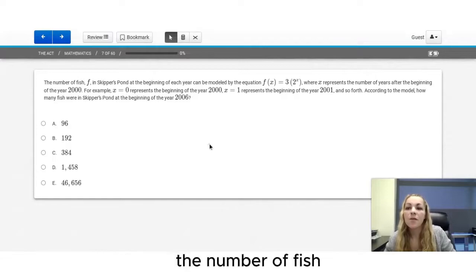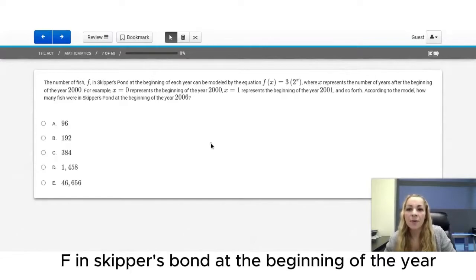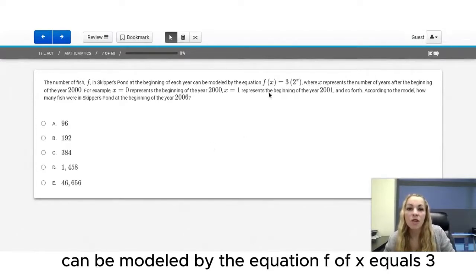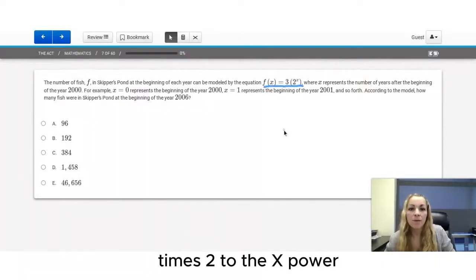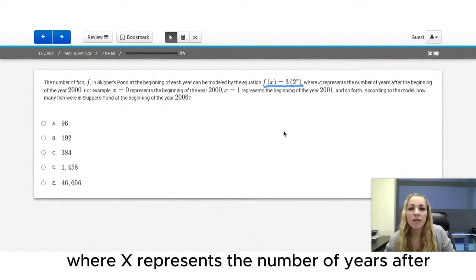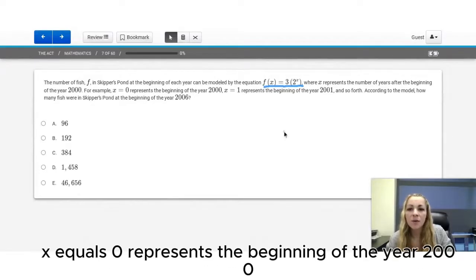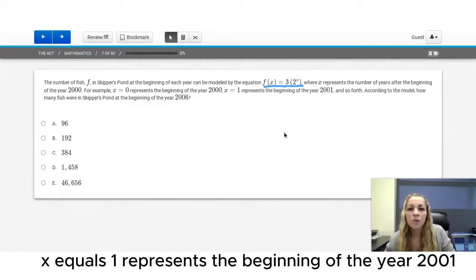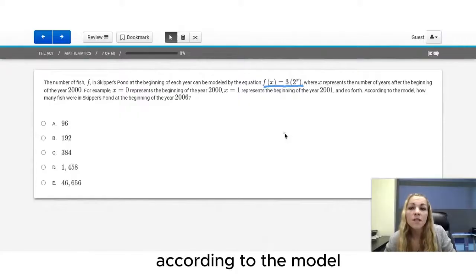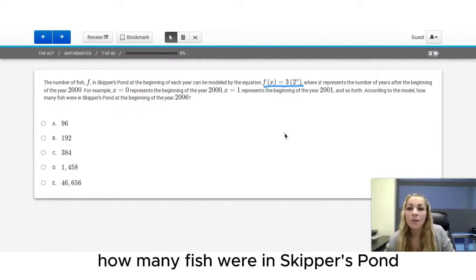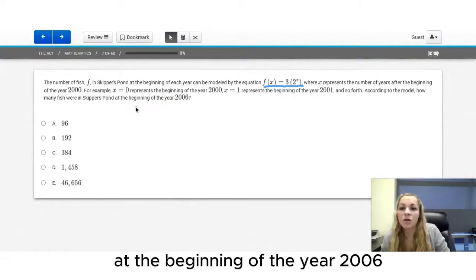Question number seven. The number of fish f in Skipper's pond at the beginning of the year can be modeled by the equation f of x equals 3 times 2 to the x power, where x represents the number of years after the beginning of the year 2000. For example, x equals 0 represents the beginning of the year 2000, x equals 1 represents the beginning of the year 2001, and so forth. According to the model, how many fish were in Skipper's pond at the beginning of the year 2006?